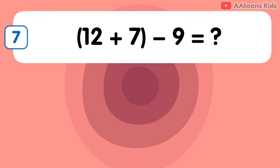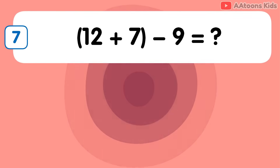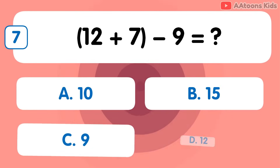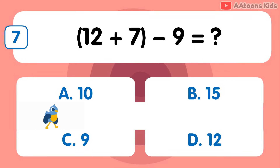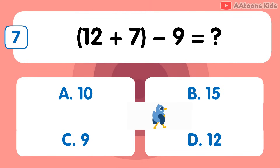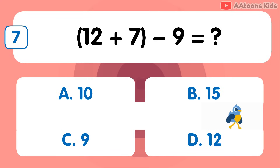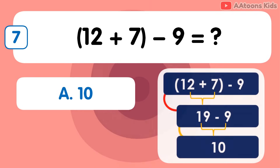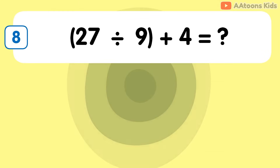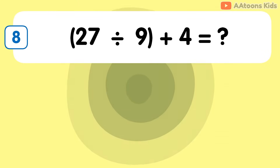12 plus 7 minus 9 is 10. 27 divided by 9 plus 4 is 7.